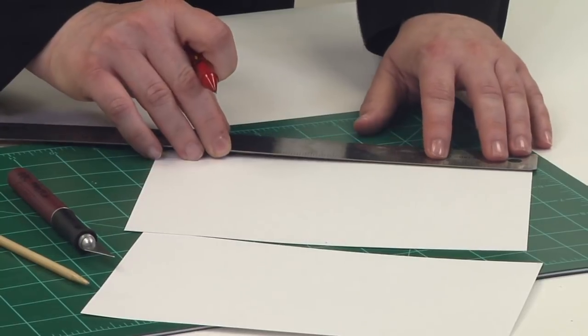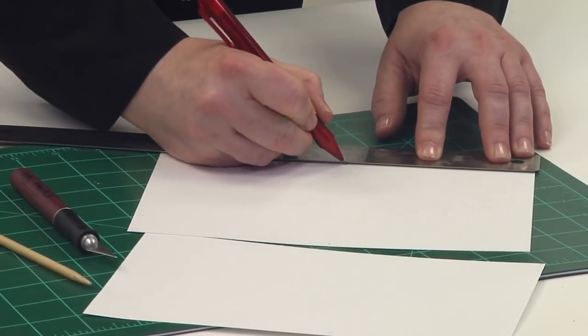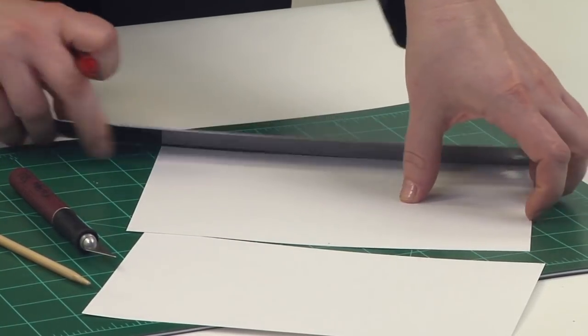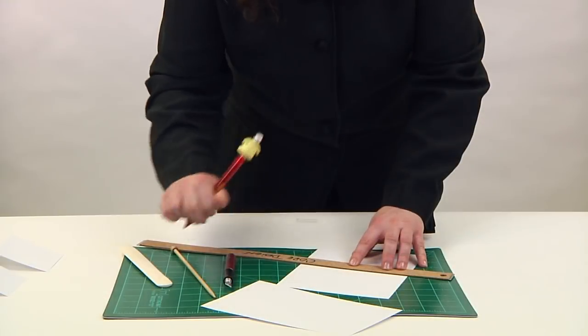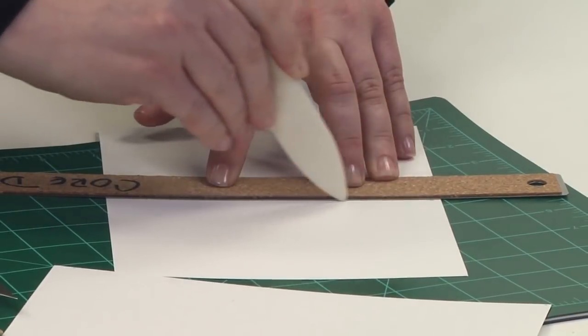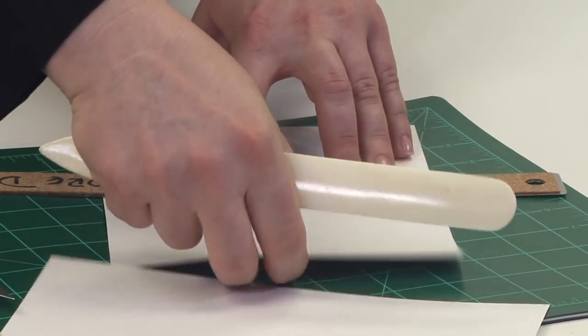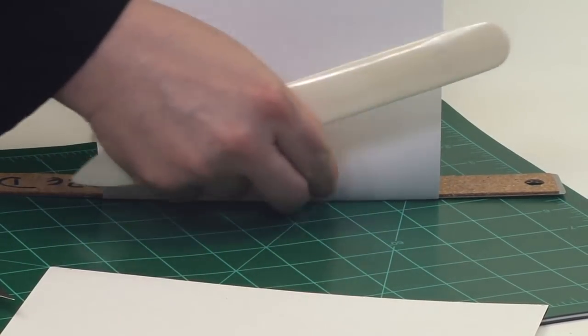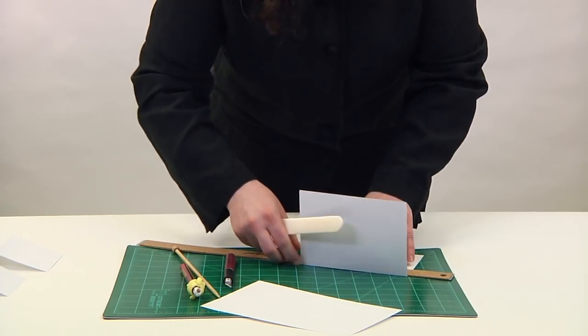You create the fold first by marking where it will be, and then scoring the paper with a bone folder or a wooden knitting needle. Scoring compresses the paper fibers, but does not cut them. The paper will now have a tendency to fold inwards. Be sure to score on the correct side though.